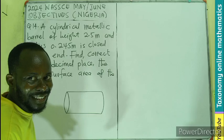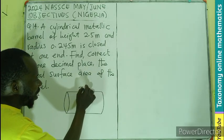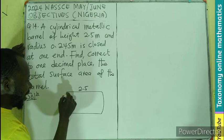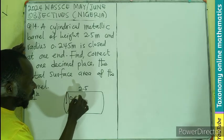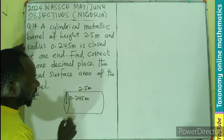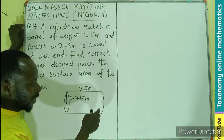It's not filled with water, so the height is going to be 2.5, then the radius is 0.245 meters. That's the radius. Since one end is open, it means we are having only one circular part.